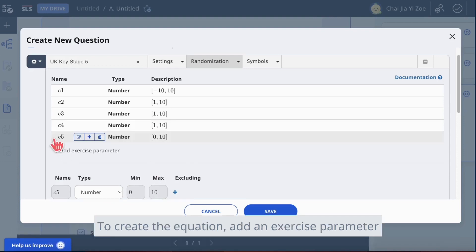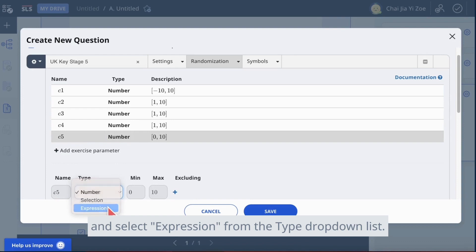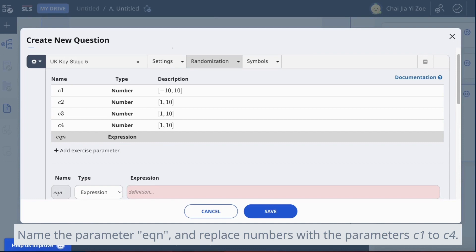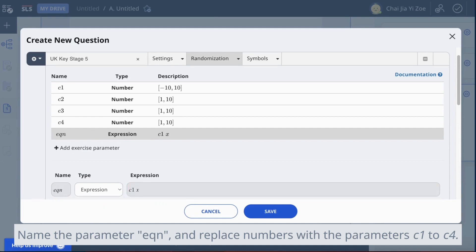To create the equation, add an exercise parameter and select expression from the type drop-down list. Name the parameter equation and replace numbers with the parameters c1 to c4.